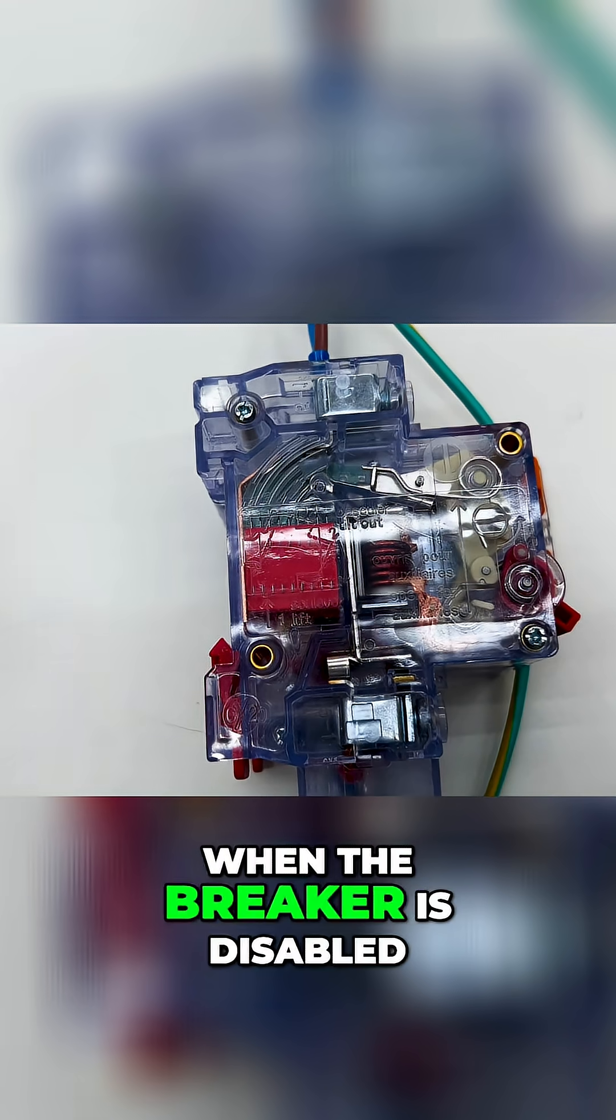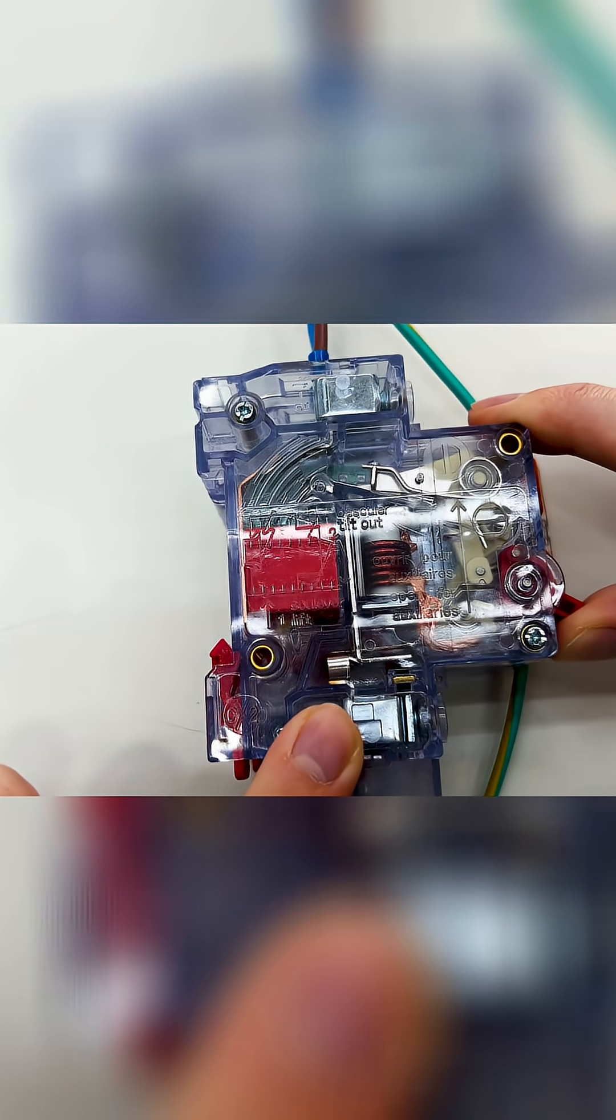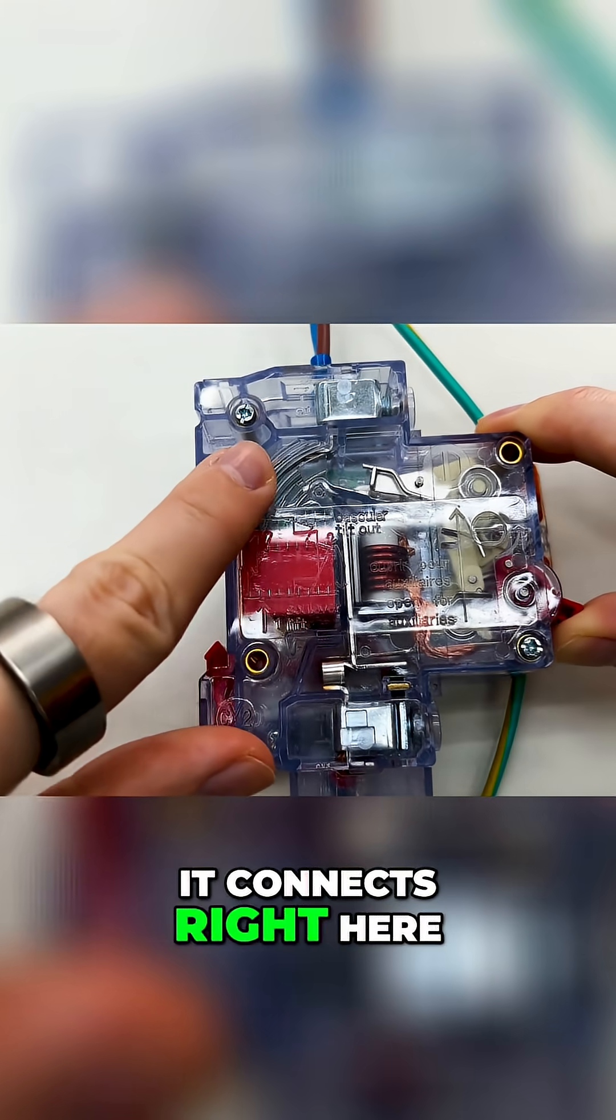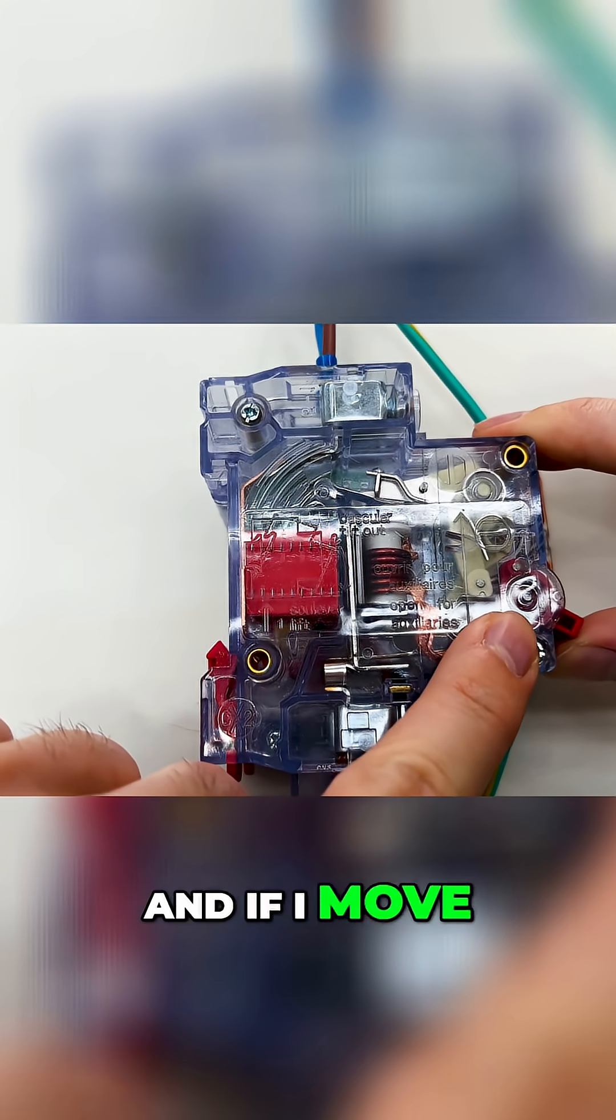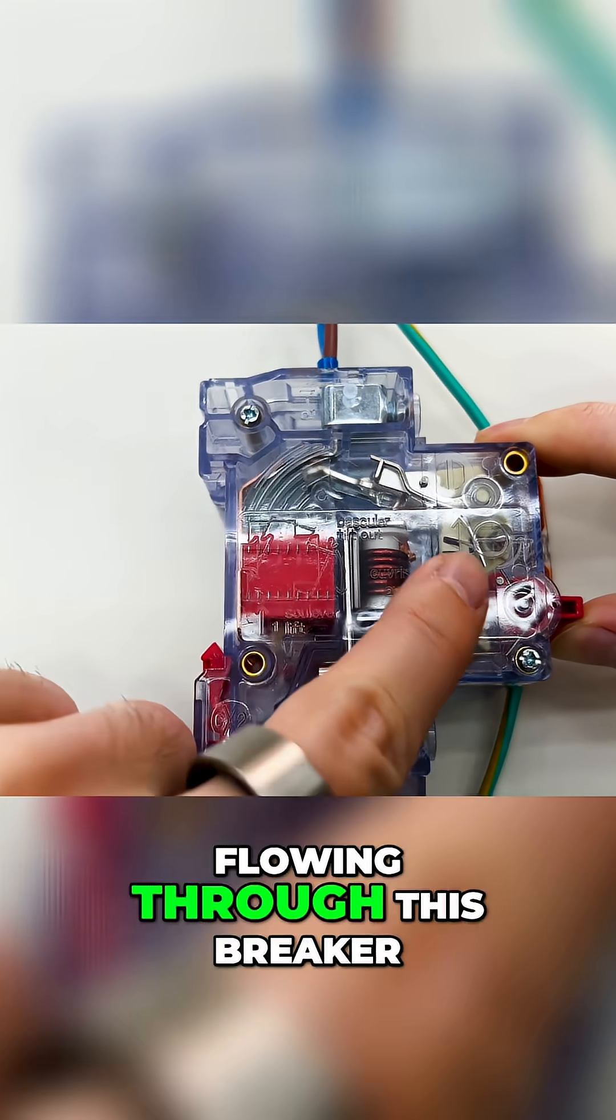When the breaker is disabled we have a gap right here, and if I enable it, it connects right here as you can see. If I move it halfway it's already connected so the power is flowing through this breaker.